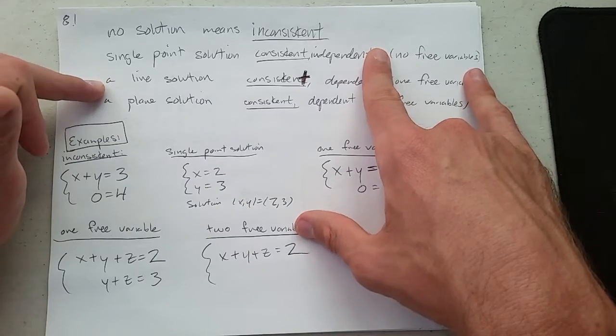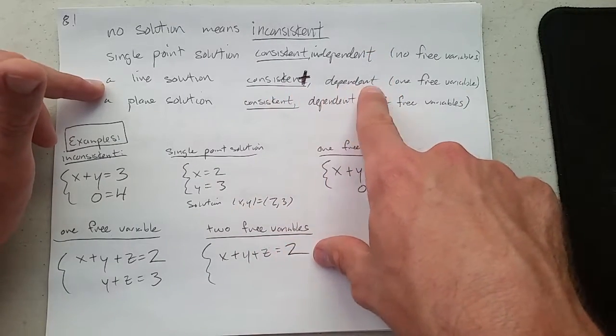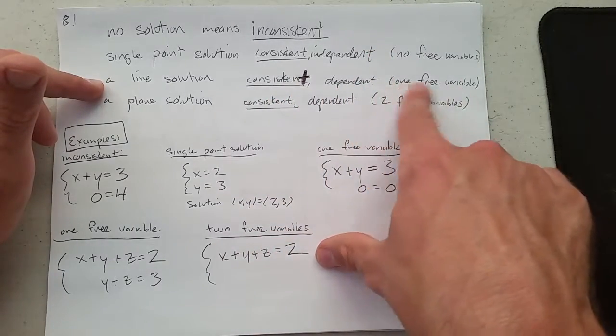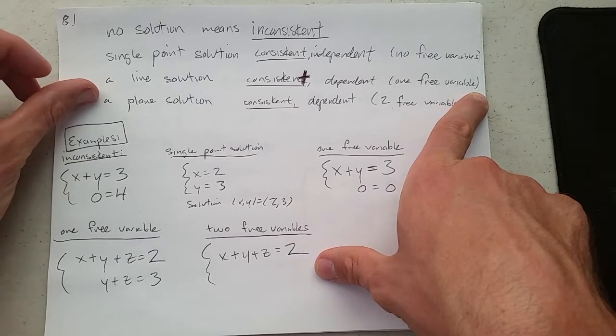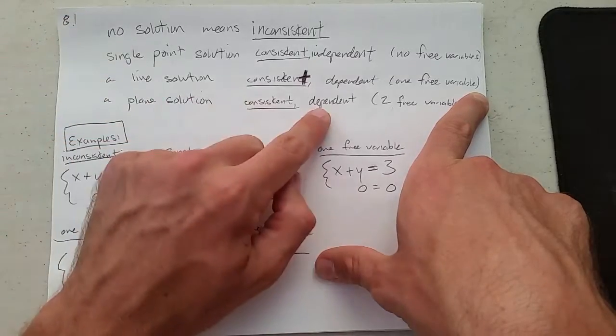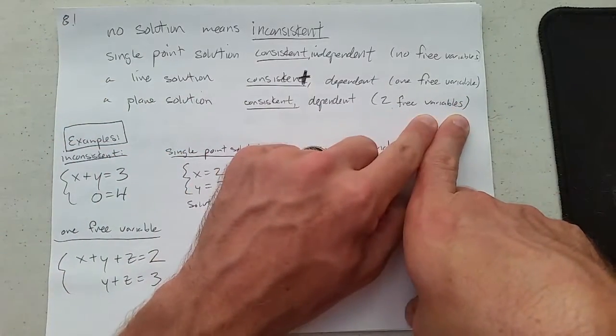If your solution is going to be a line, you would be consistent. We call this dependent with one free variable that the solution depends on. If we can have a plane solution, meaning two-dimensional solution, it would be consistent with two free variables.